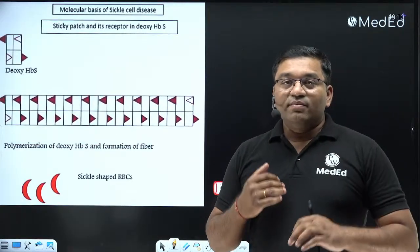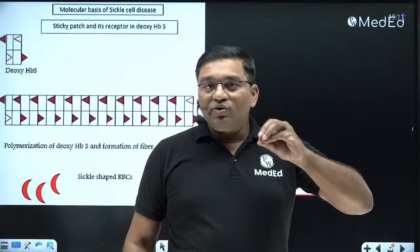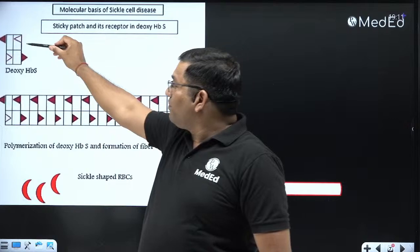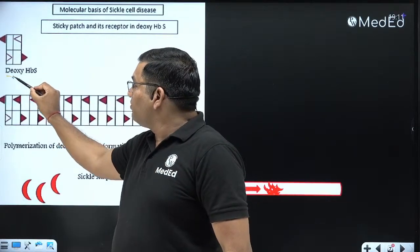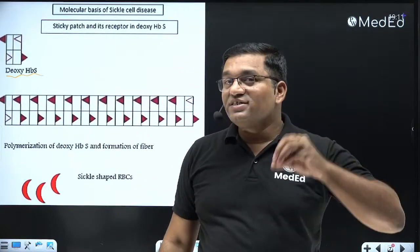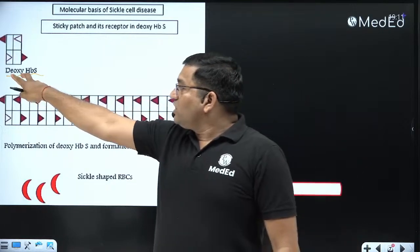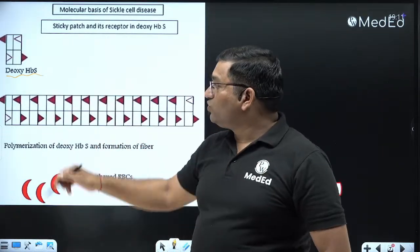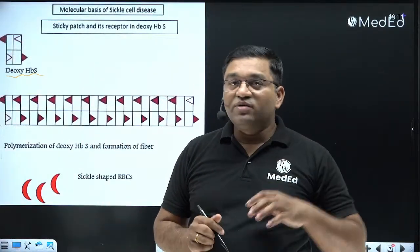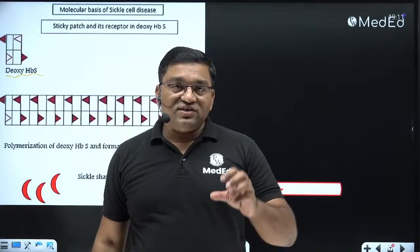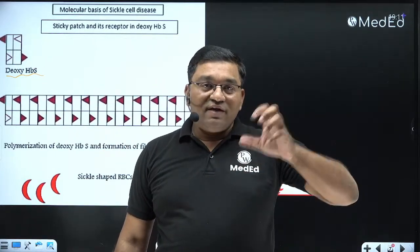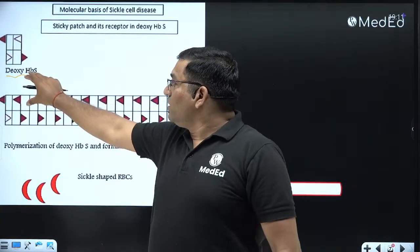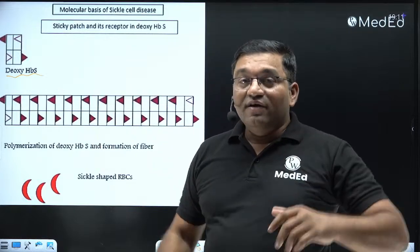Now let's see the mechanism behind sickling. Polar glutamic acid is replaced by non-polar valine, which gives a sticky patch on deoxyhemoglobin S. There is also a complementary patch on deoxyhemoglobin S. When oxygen supply decreases and hemoglobin is in the deoxy form, precipitation occurs. In the oxygenated state, hemoglobin S also has a sticky patch, but there is no complementary patch, so the long aggregate does not form.